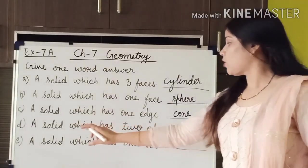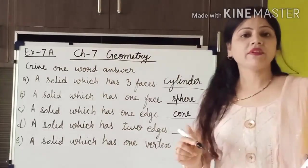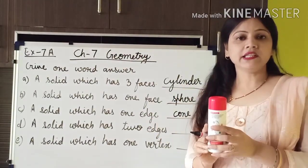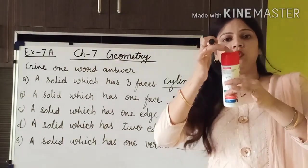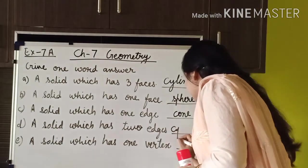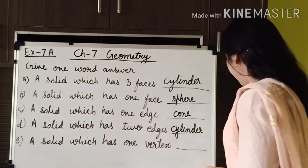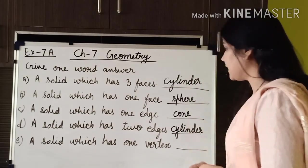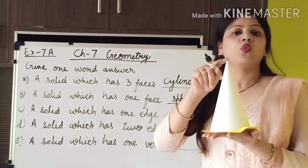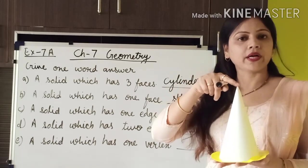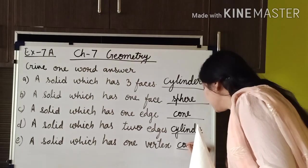A solid which has two edges — here we can write: cylinder. And the last question is a solid which has one vertex. Cone only has one vertex. So the one vertex we can find is cone — here we can write: cone.